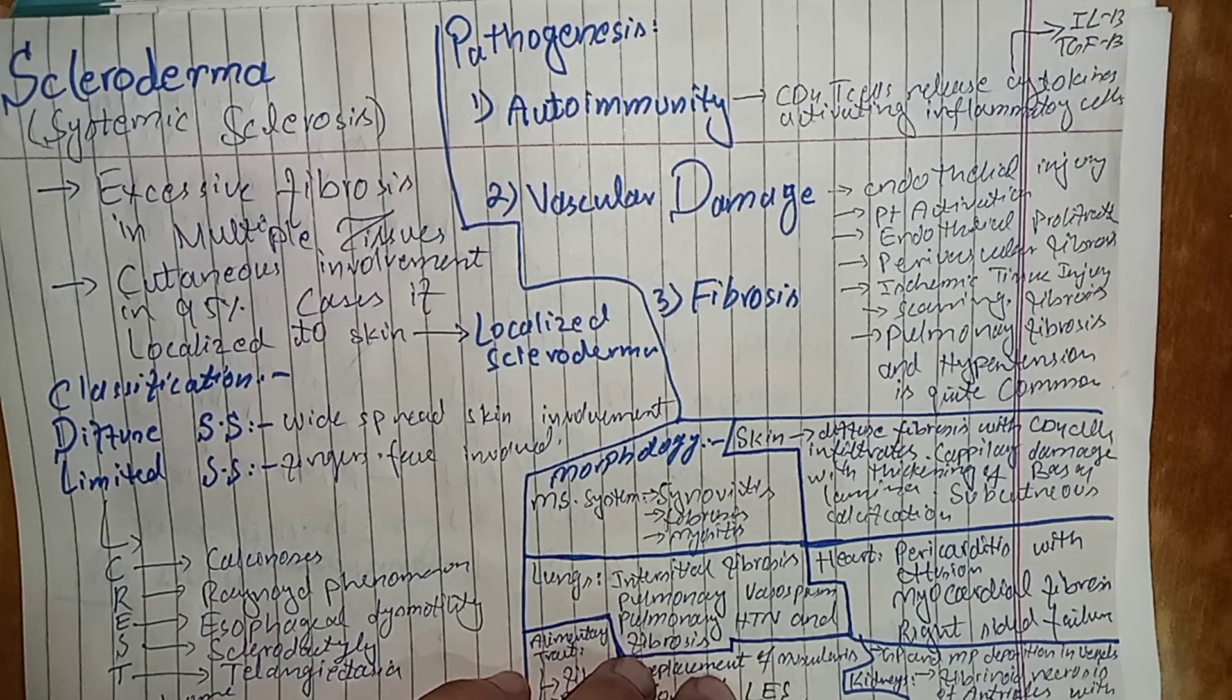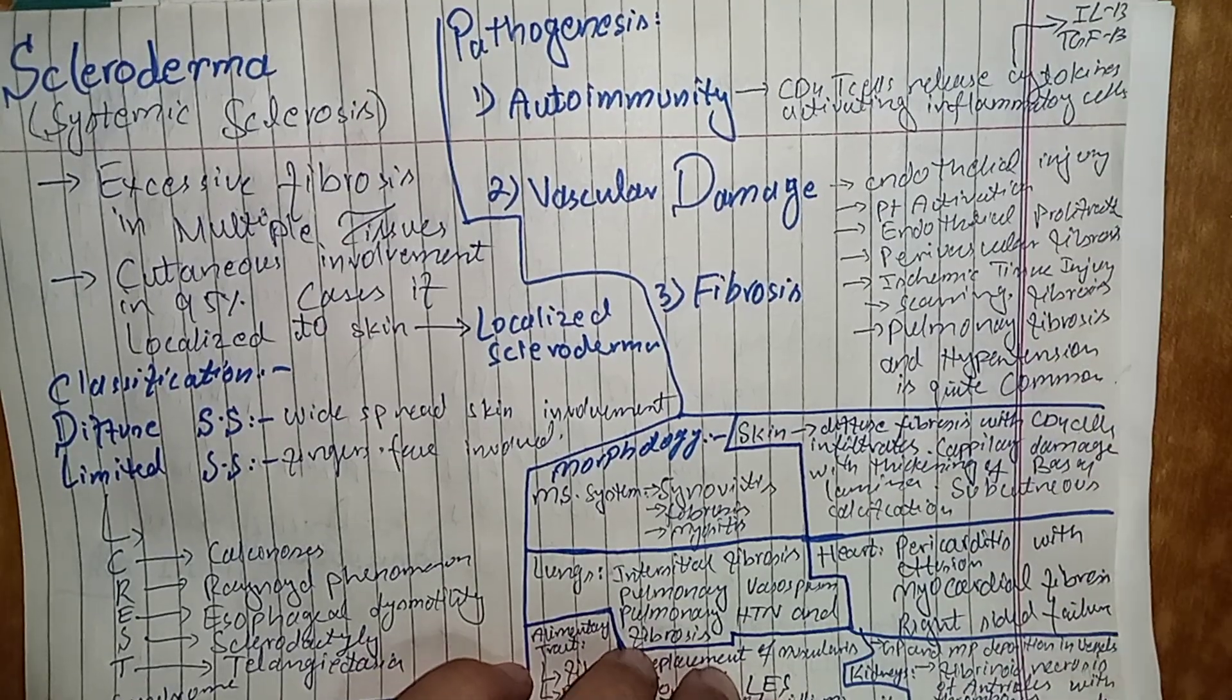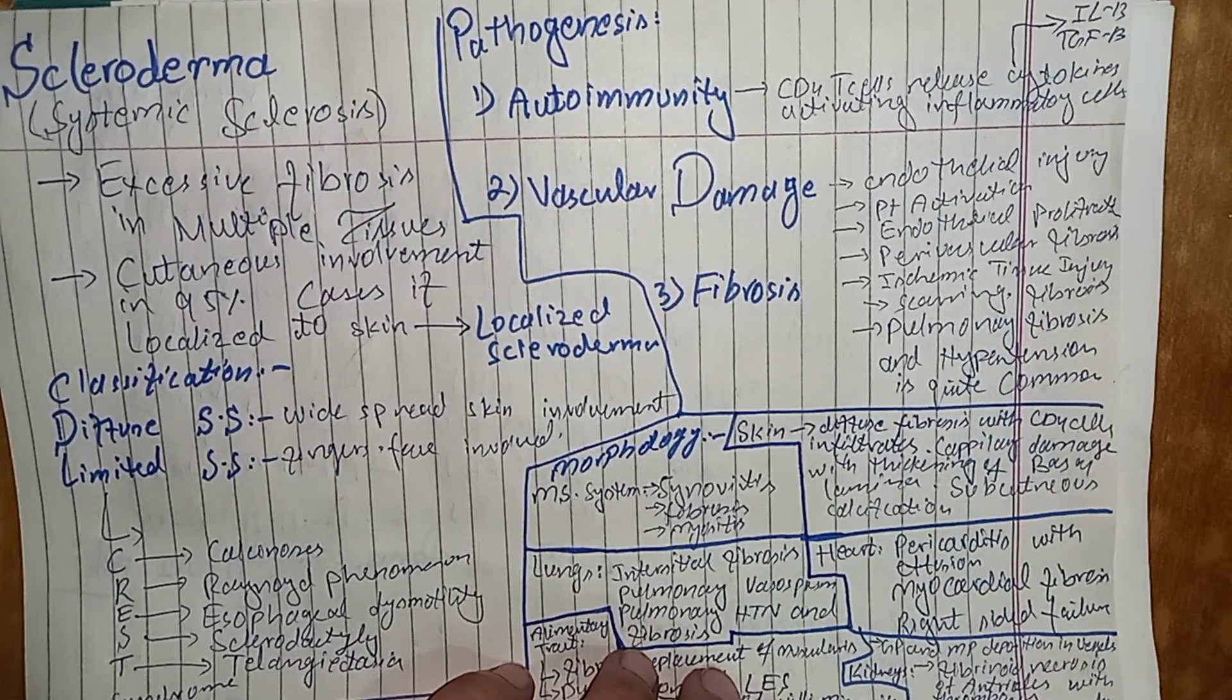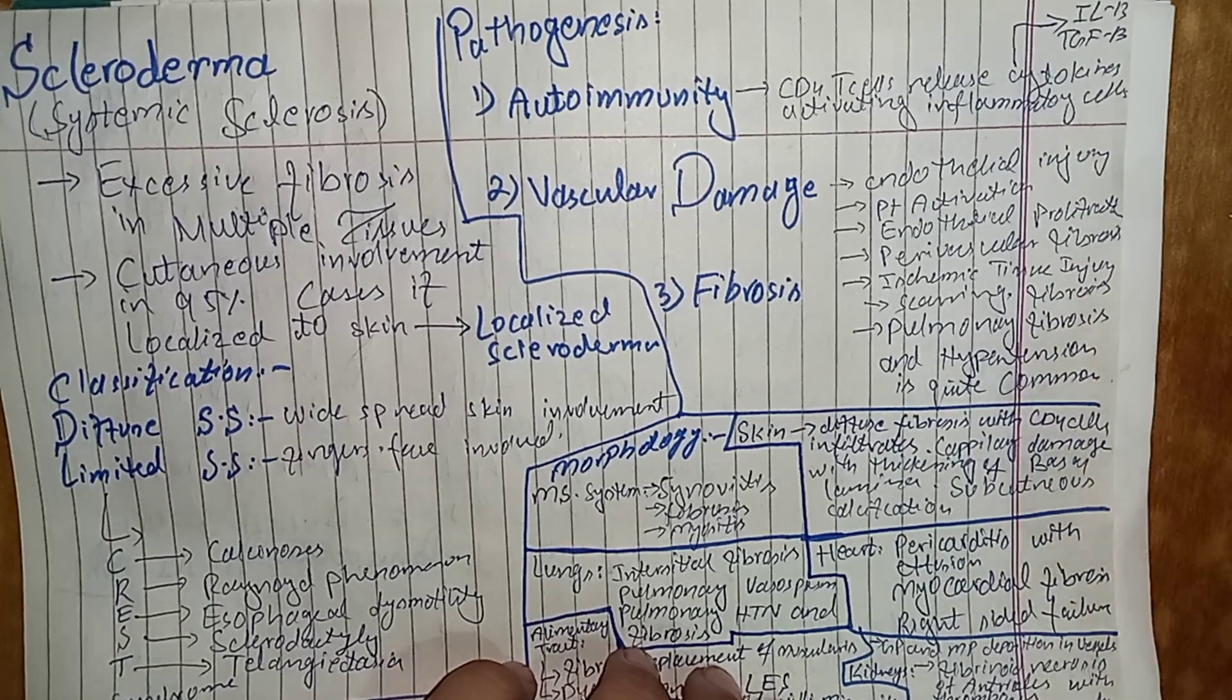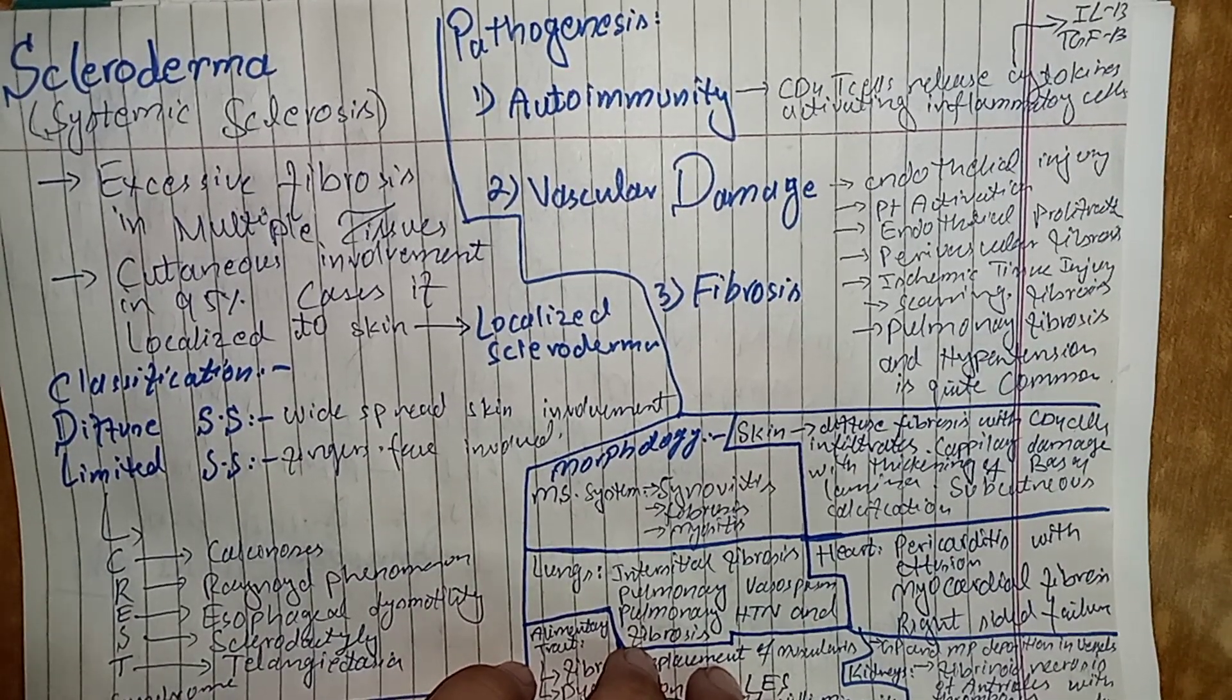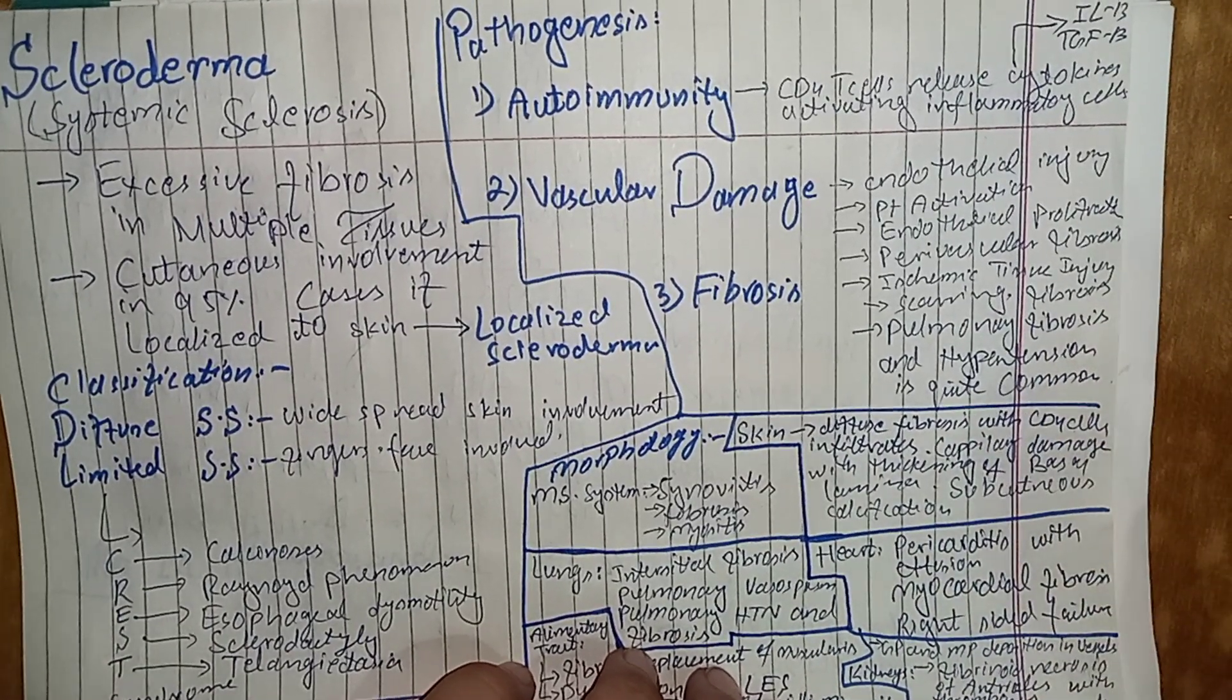And these cytokines activate the inflammatory cells. And these inflammatory cells can cause vascular damage. There is endothelial injury, endothelial activation, there is platelet activation, there is proliferation of endothelium, there is perivascular fibrosis, when endothelium gets damaged, there is perivascular fibrosis, ischemic tissue injury also occurred that this ischemic tissue injury can lead to the further vascular fibrosis.